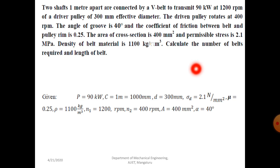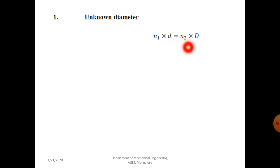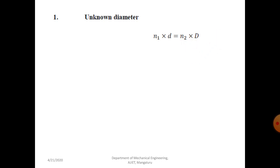Step 1: Find the unknown diameter. Using the relation N1*d = N2*D, where N1 is speed of smaller pulley, d is smaller pulley diameter, N2 is speed of larger pulley, and D is diameter of larger pulley. Substituting: 1200 × 300 = 400 × D, so D equals 900 mm. This is the unknown diameter of the larger pulley.